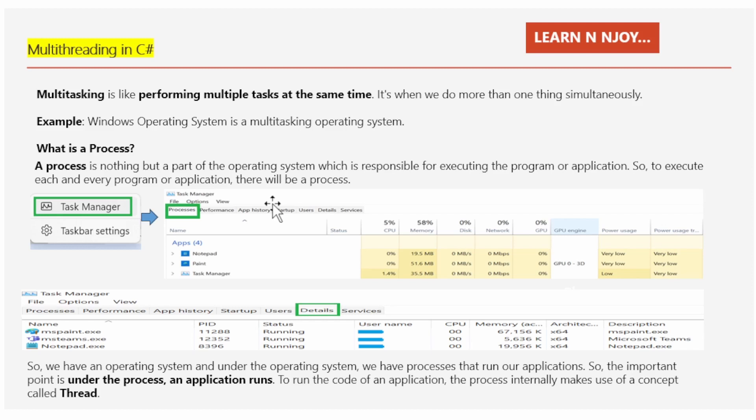In computers, multitasking happens when your device runs different programs or applications at the same time. For instance, you might have a web browser open, music playing, and a messaging app all running simultaneously. In simple terms, multitasking is about doing multiple things together, whether it's in everyday life or on a computer.